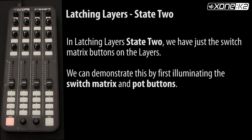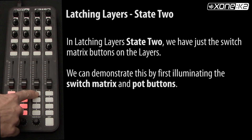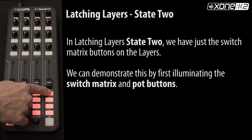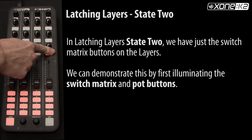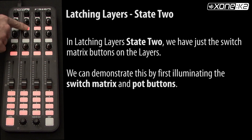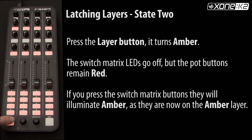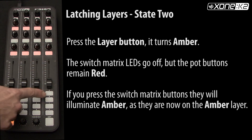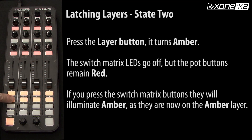In latching layer state 2, we have just the switch matrix buttons on the layers. We can demonstrate this by first illuminating the switch matrix and pop buttons. When you press the layer button it turns amber, and you will notice that the switch matrix LEDs go off but the pop buttons remain red. If you press the switch matrix buttons they will illuminate amber, as they are now on the amber layer.